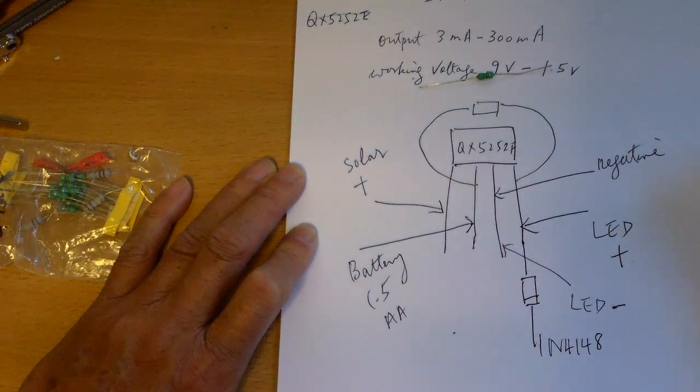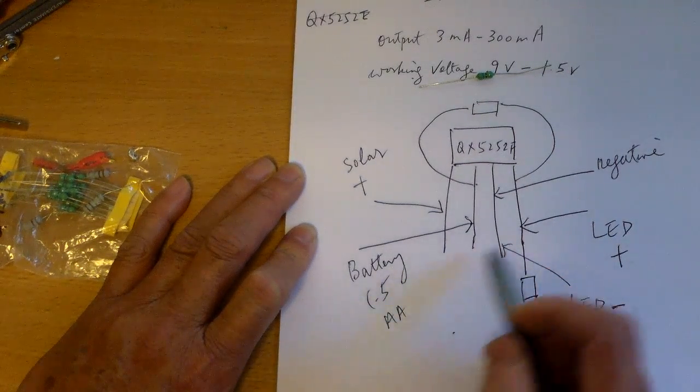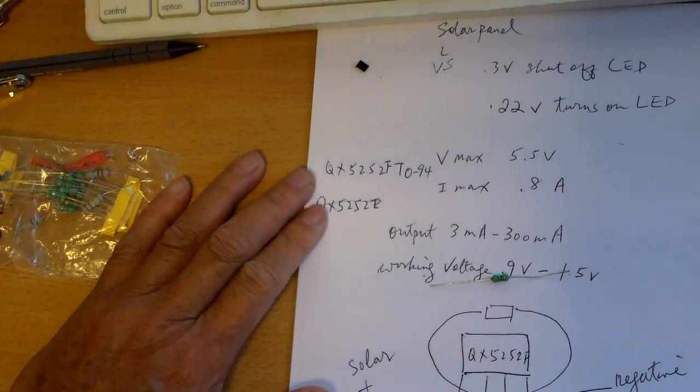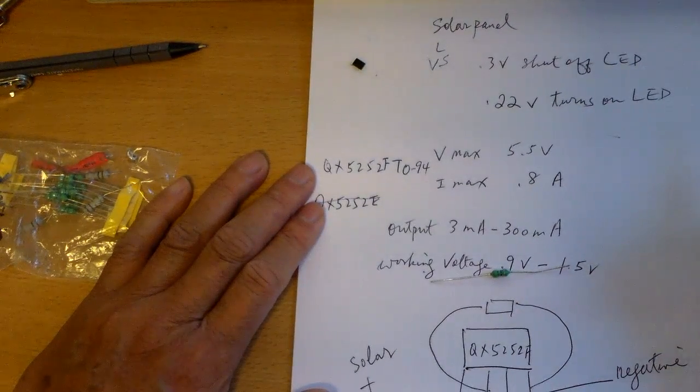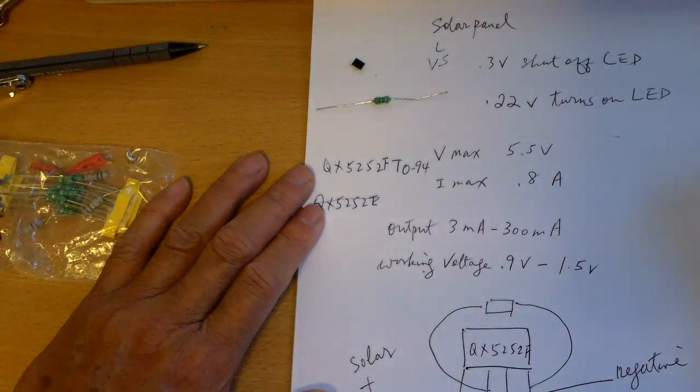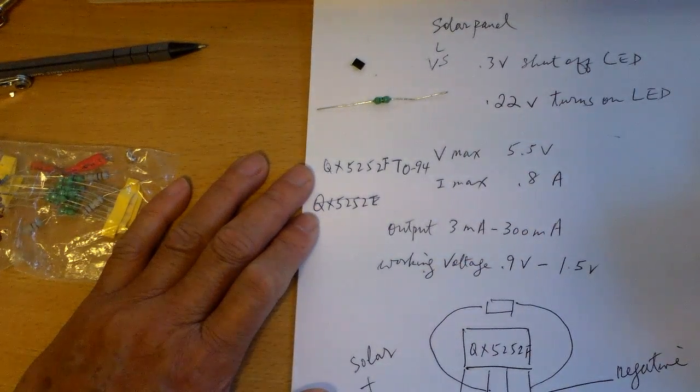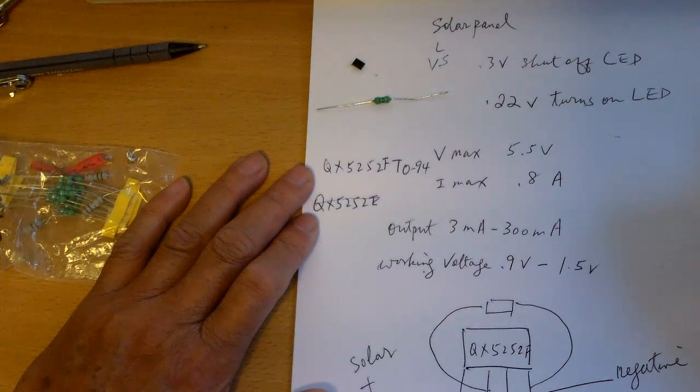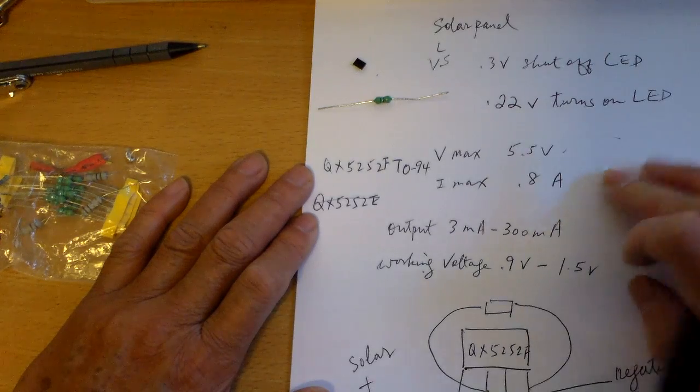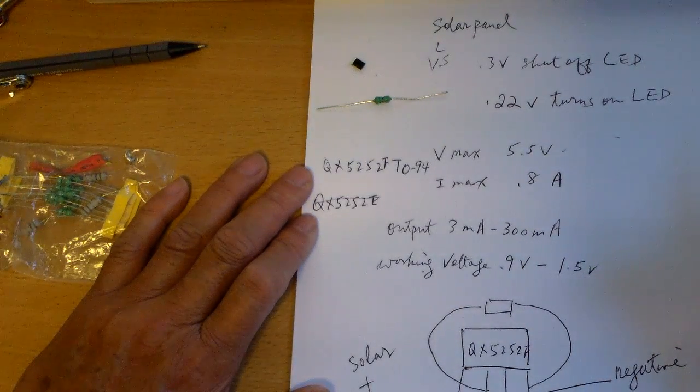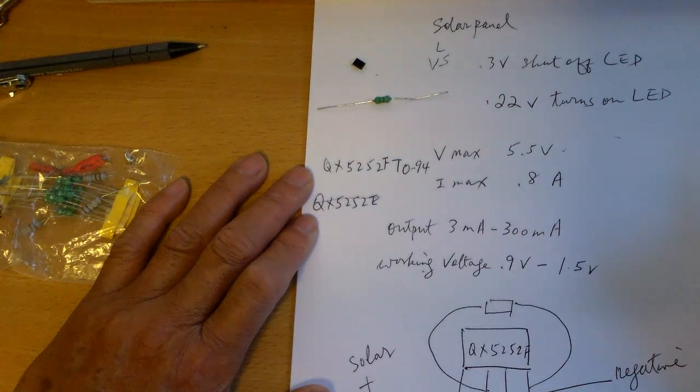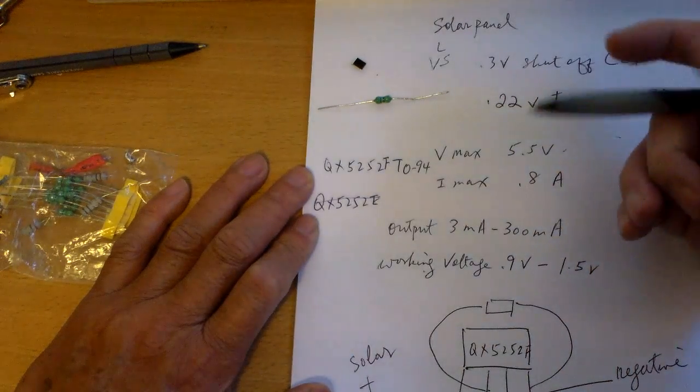And that's it. Your battery negative again connects to the third leg here. The other thing you have to be concerned about is the size of the solar panel. I use like a 5 volt solar panel, and the maximum voltage handling of the QX5252 is 5.5 volts and 0.8 amps at the input.